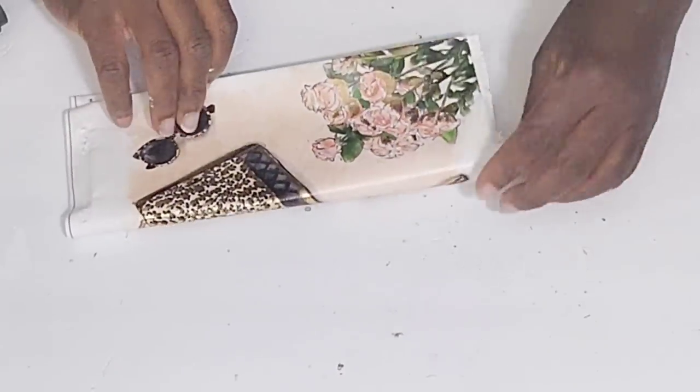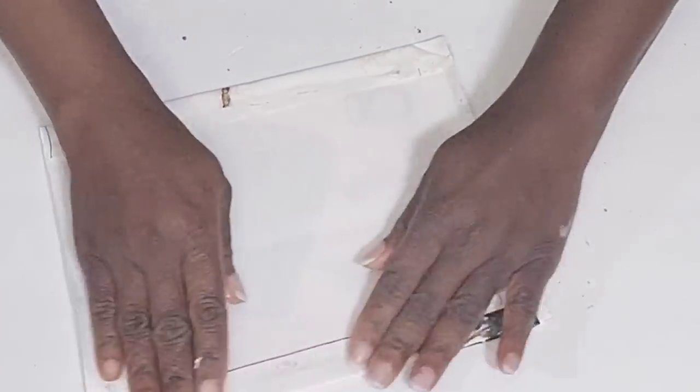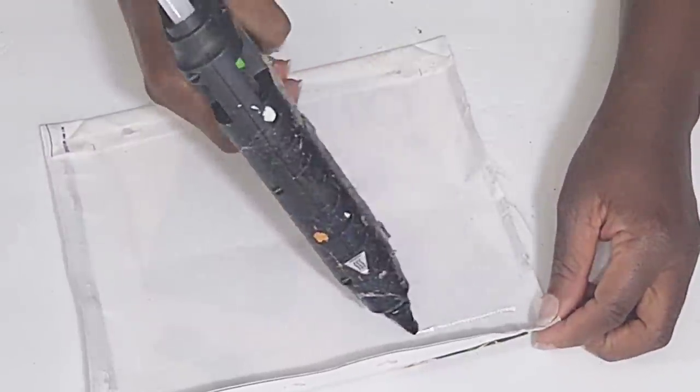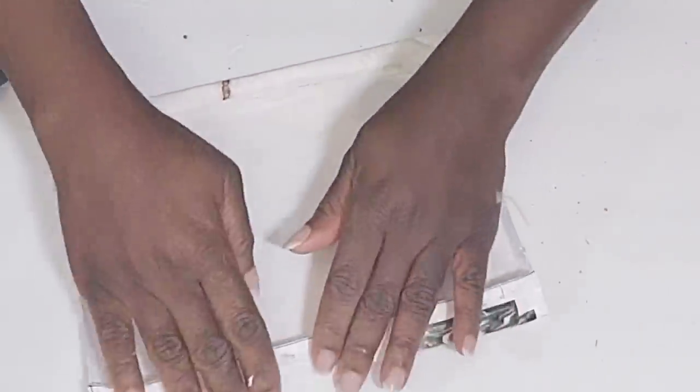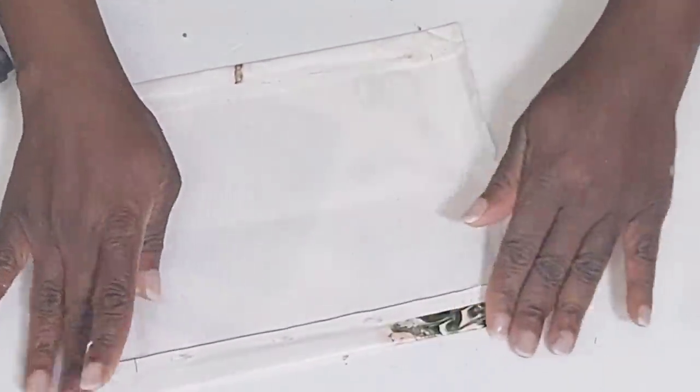This is so cute. And you can choose, you have so many options of really pretty canvas pictures from the Dollar Tree to make this DIY. I'm also going to fold in the sides and I'm just going to be taking some hot glue.